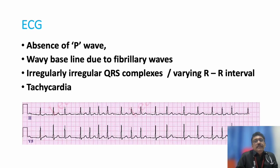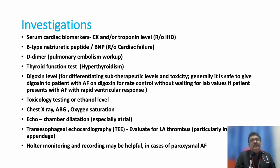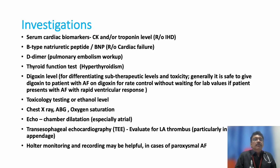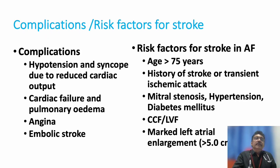On ECG, the most striking features are irregularly irregular QRS complexes, wavy baseline, no P waves, and varying RR intervals. Most patients will have tachycardia. For investigations: troponin I for ischemic heart disease, D-dimer if pulmonary embolism is suspected, thyroid function tests for thyroid disease, chest X-ray for COPD, echocardiography to check atrial dilatation or mural thrombus, transesophageal echo, Holter monitoring for paroxysmal AF, and toxicology screening for alcohol.